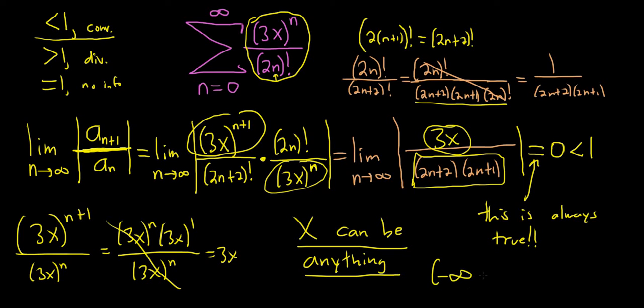So negative infinity to infinity is your answer. Which is really nice because that means we don't have to check the endpoints. You know, we're not checking infinity and negative infinity. That doesn't make any sense. So really nice because we got 0 and that's less than 1 always.